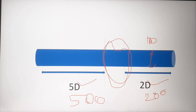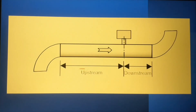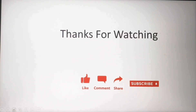When installing the flow meter or PT meter, you must follow the 5D-2D concept: 5D is the upstream side and 2D is the downstream side. Before the flow meter you need 5D of straight pipe, and after the flow meter you need 2D. Upstream means before the installation point and downstream means after it. This is typically stated in the installation manual.